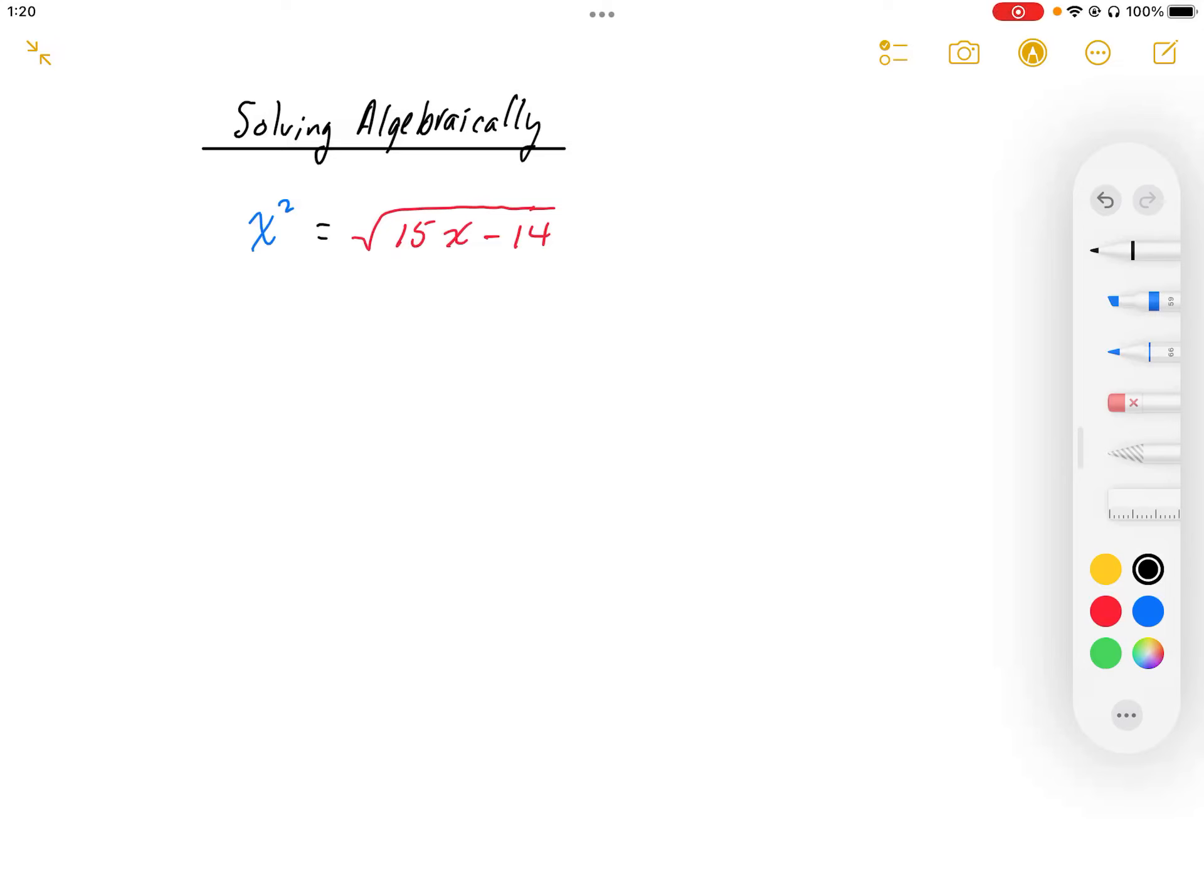This equation we were not asked to solve algebraically, but we really should make sure we understand how to do this. So this is a square root equation, so we should get rid of that square root. We're going to do that by squaring both sides of this equation.